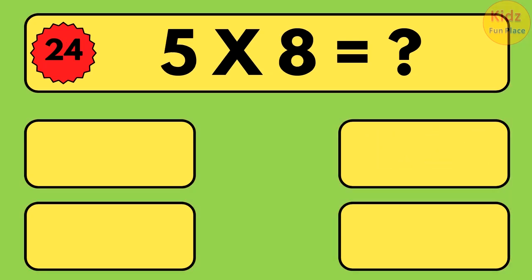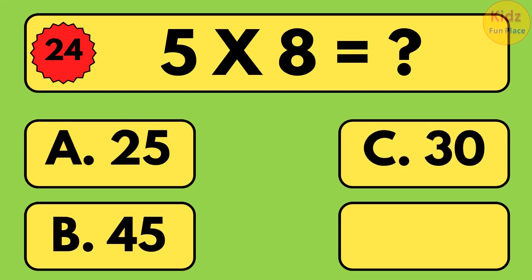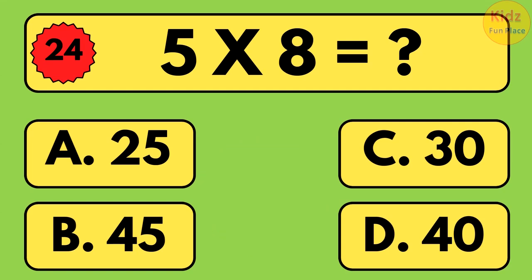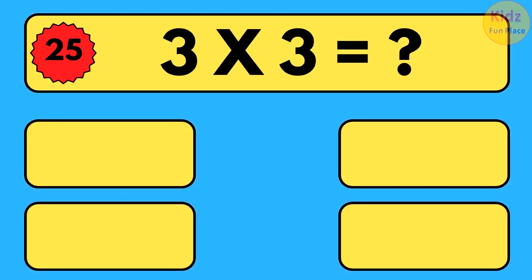5 times 8 is equal to what? 5 times 8 is equal to 40.